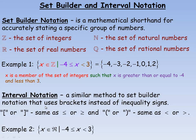Interval notation is only for the set of real numbers. So if we mean all real numbers such that X is greater than or equal to negative 4 but less than 3, we write it in interval notation like this — it looks like an ordered pair. The square bracket on the left means X can equal negative 4, and the round bracket on the right means it goes up to but does not include 3. For example, 2.999... is still less than 3.